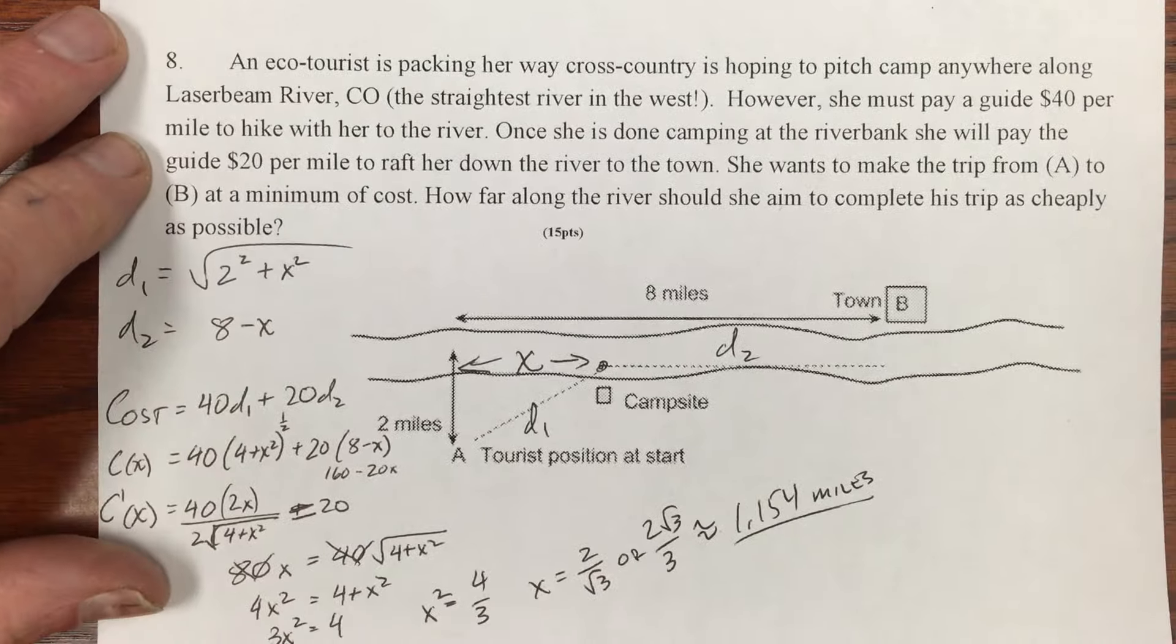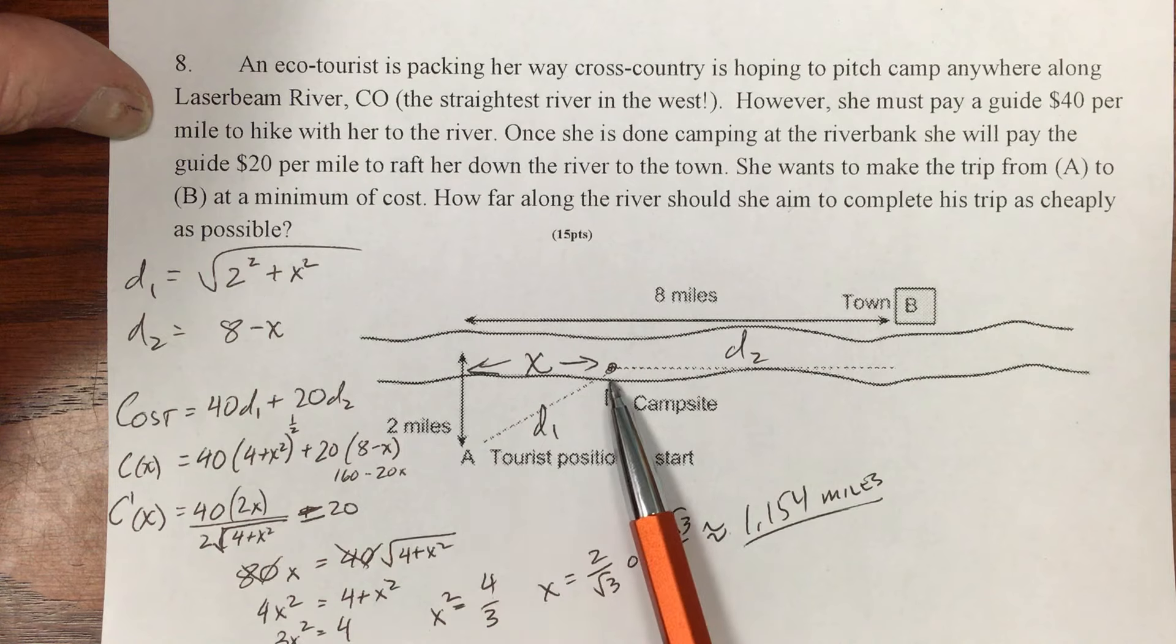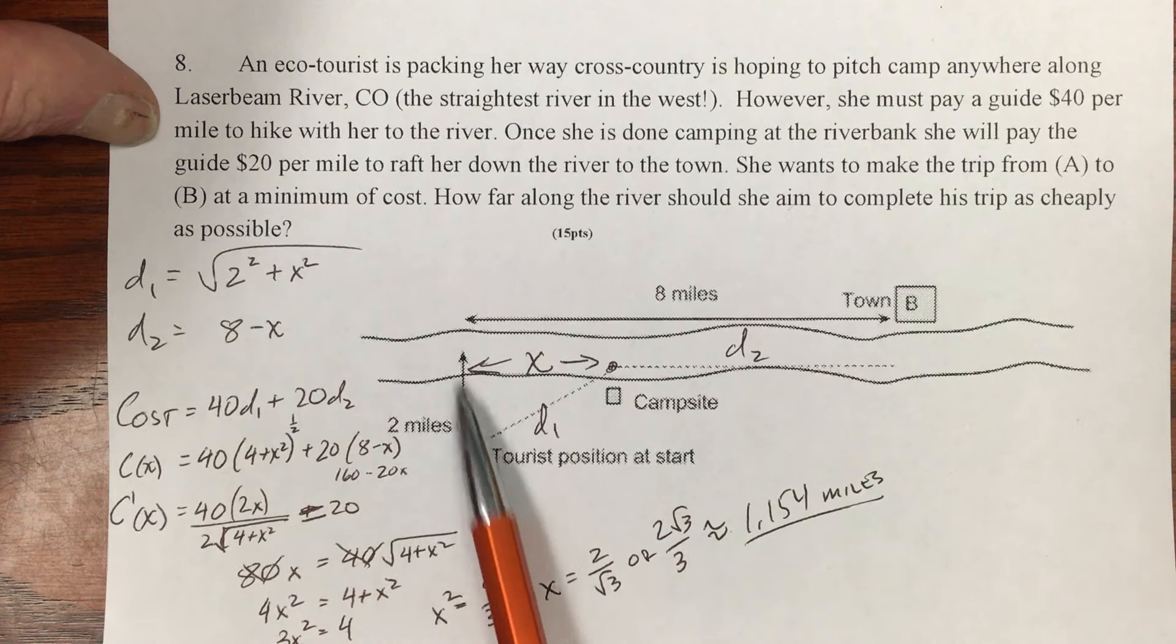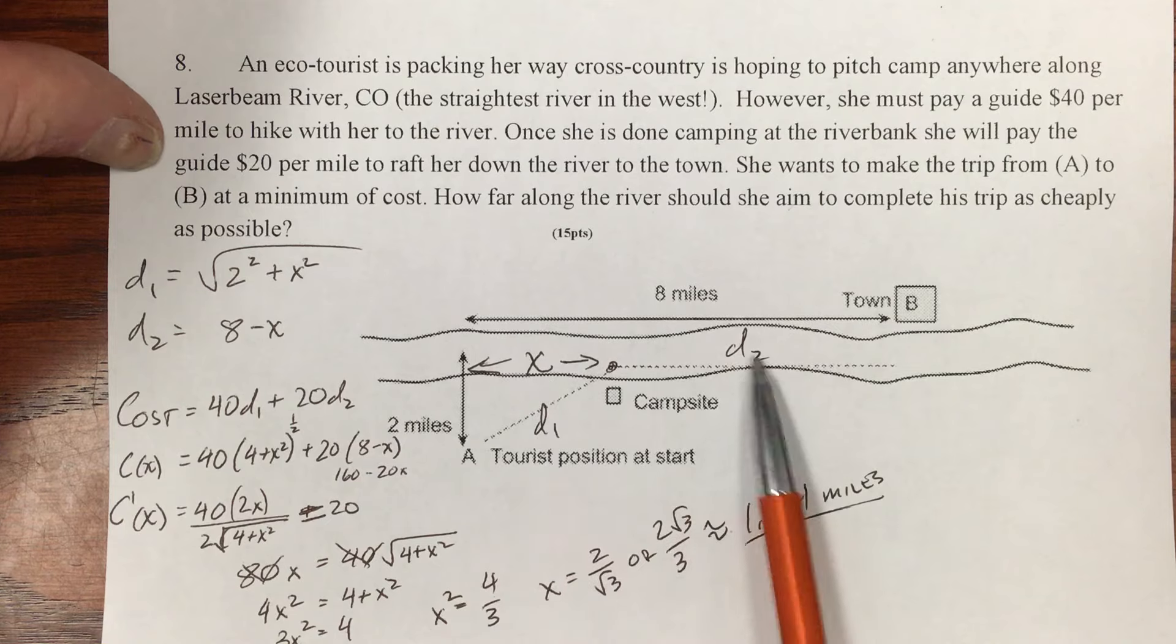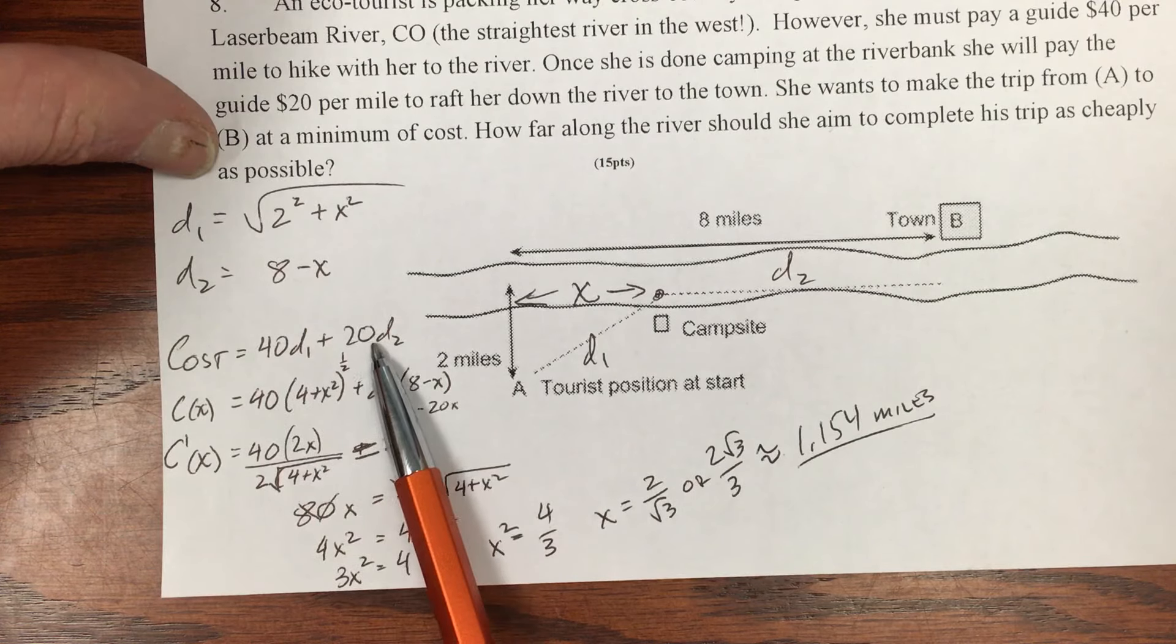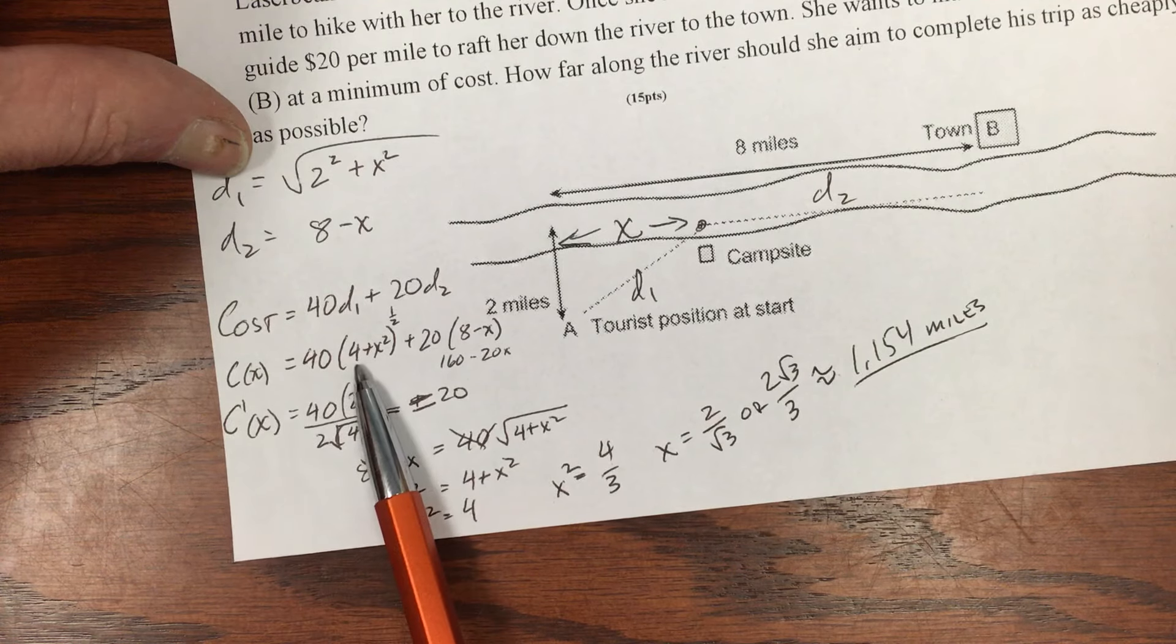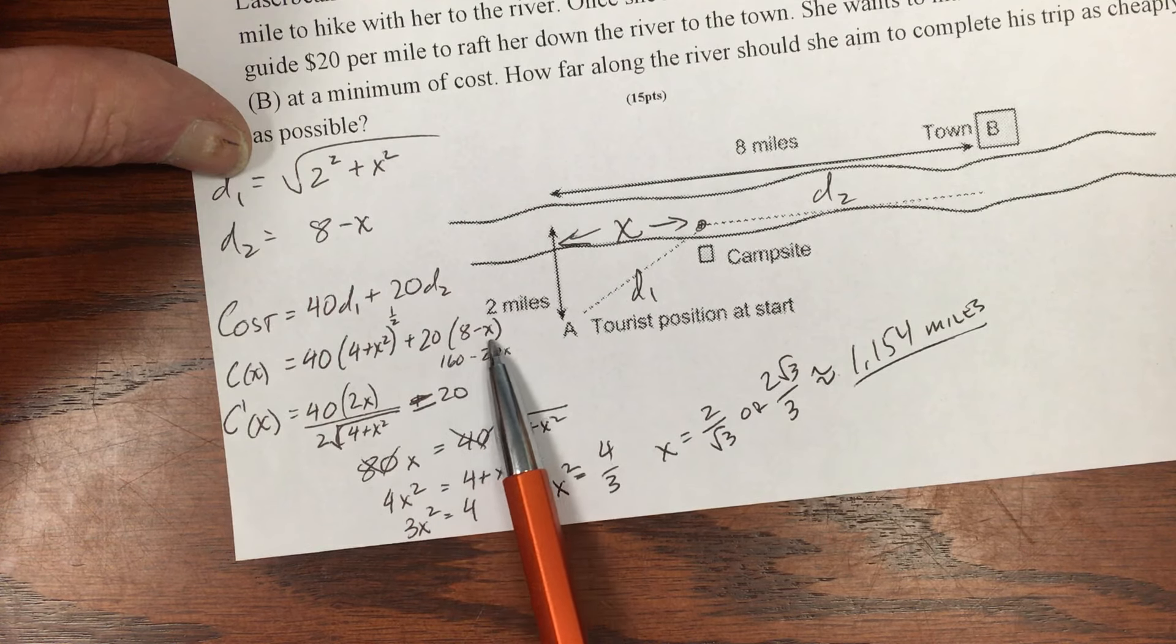This last one here, the canoe trip or whatever it is, I've drawn it out. You've got to pick some distance x along the riverbank that you aim for. Whatever that is, that first distance is going to be Pythagorean-based. So the distance is the square root of (4 + x²), because you're 2 miles away. The distance that you're left over with is simply x taken away from 8. And then you multiply each by the cost of how much it is to be transported along these two lines of transport.